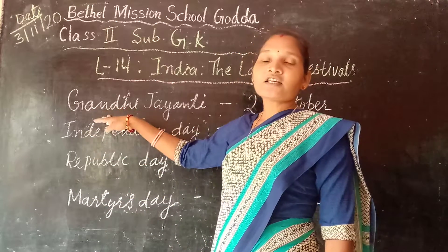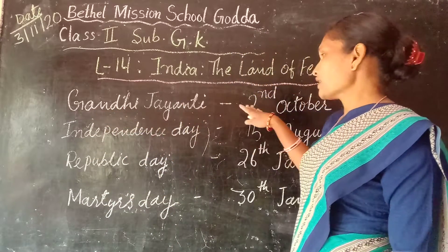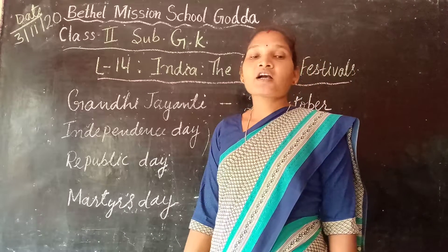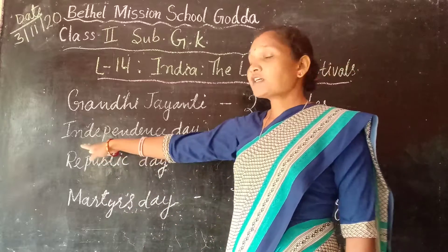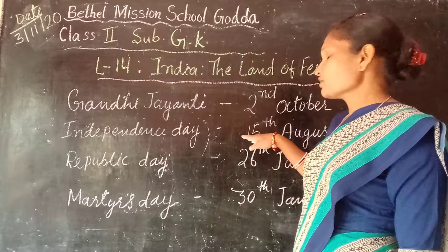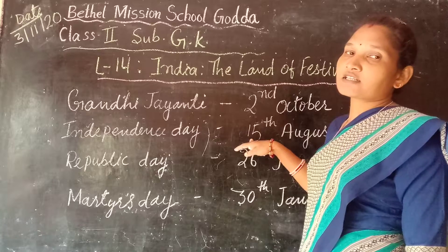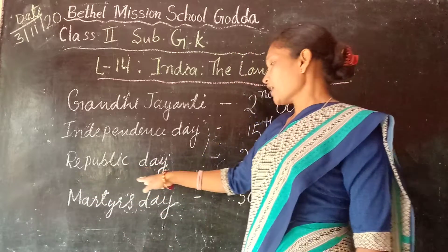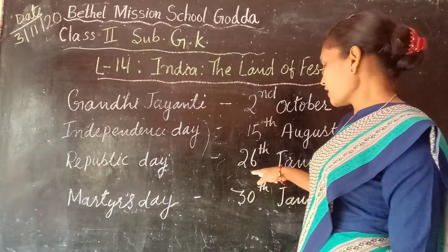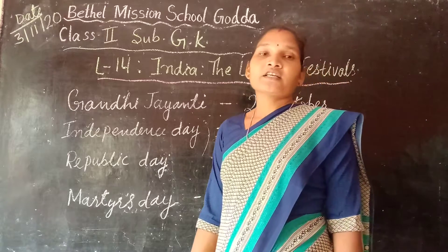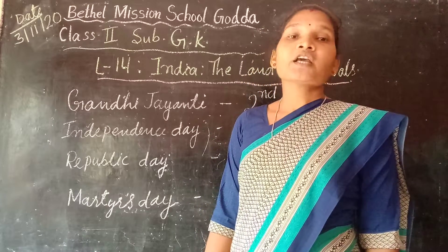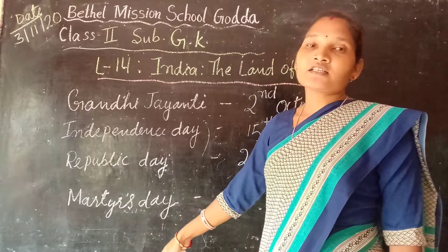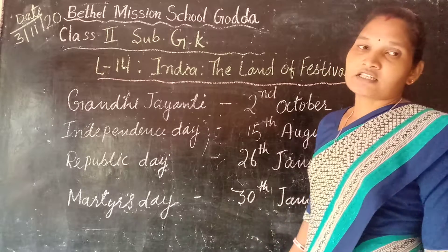So Gandhi Jayanti is celebrated on 2nd of October — that is the birthday of Mahatma Gandhi. Independence Day is celebrated on 15th of August, the day India became independent. Republic Day is celebrated on 26th January, the day the constitution came into effect. And Martyrs Day is celebrated on 30th January.